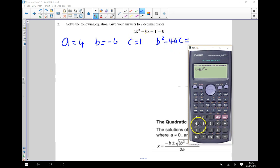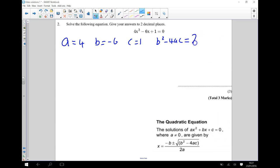So that's going to be 4 times a which is 4 times c which is 1 and that gives me 20. Okay so I can put in 20 over here. So that's my value of b squared take away 4ac.